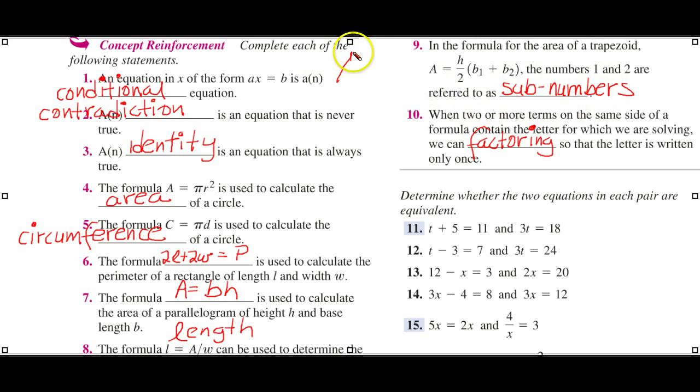You recall a trapezoid looks like this, where there are two sides parallel. So, this would be, let's say, b sub 2, and this would be b sub 1. Or you could switch them around. And then you have here the height. And again, these are formulas.